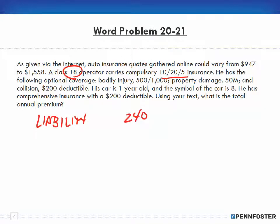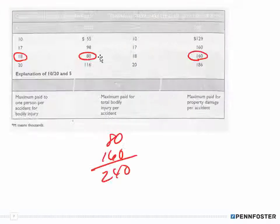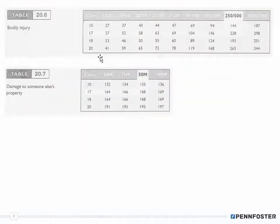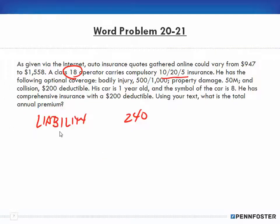He has the following optional coverage — bodily injury. Jumping down to the bodily injury table, that's for 500/1,000, and it's class 18. So that's an additional $251 for bodily injury.